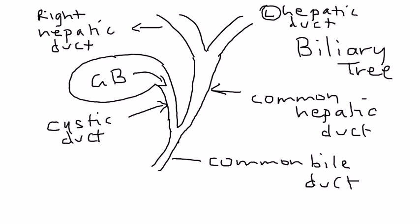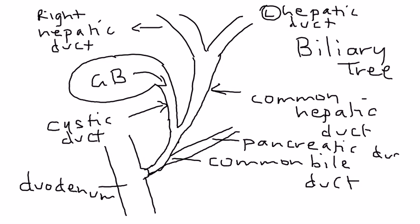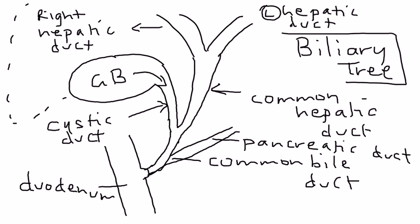The common hepatic duct and the cystic duct join to form the common bile duct, which enters the duodenum at a specific point. Another duct that joins the common bile duct is the pancreatic duct. All these ducts make up the biliary tree, and the liver sits up above this system.